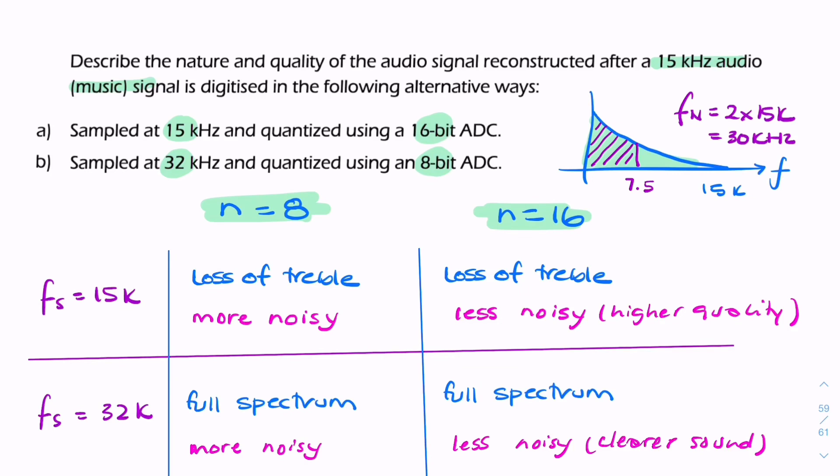Ideally what we'd want is both high sample rate and high bit depth: 16 bits per sample and 32 samples per second. That's what we'd want ideally. The choices in the question, however, don't include that.